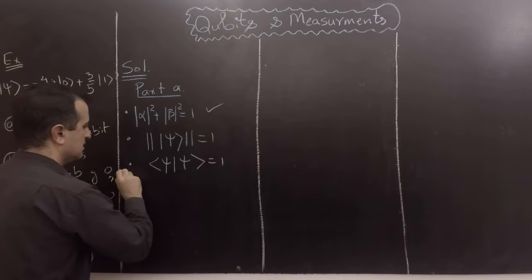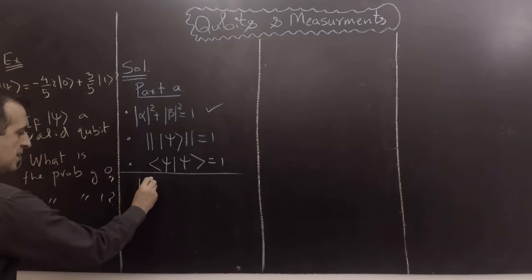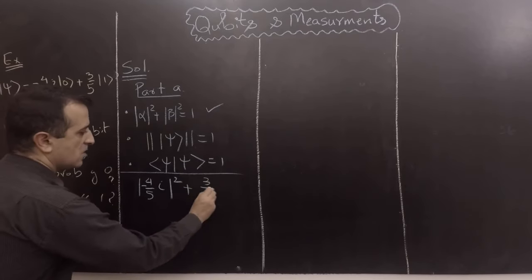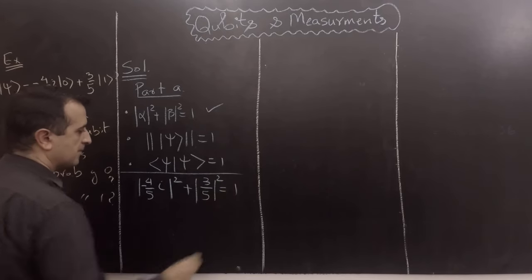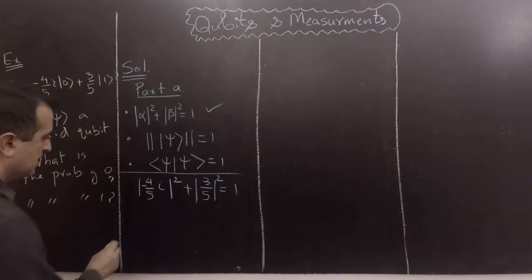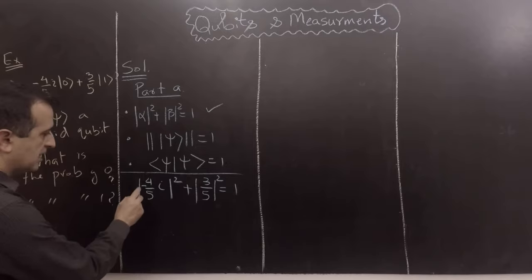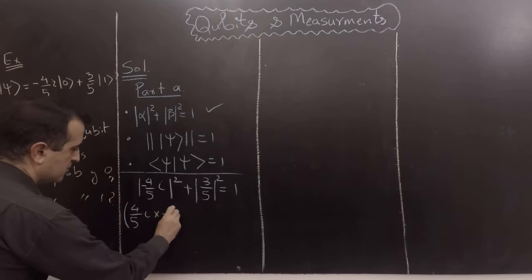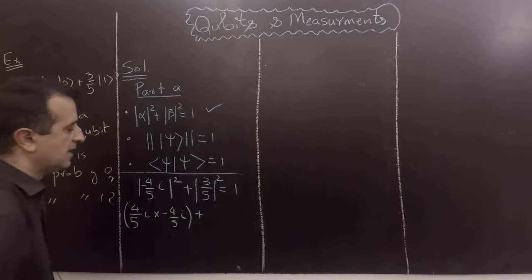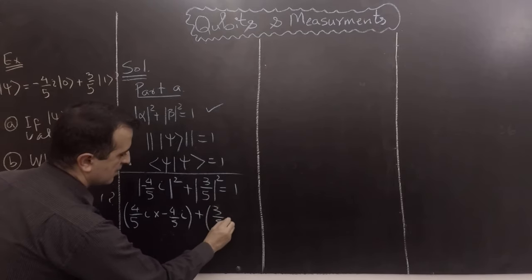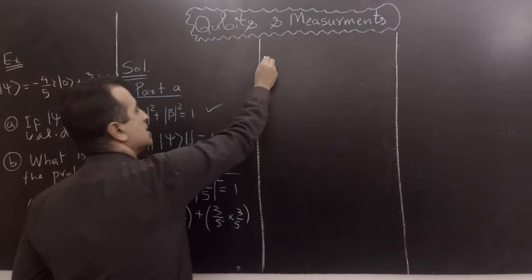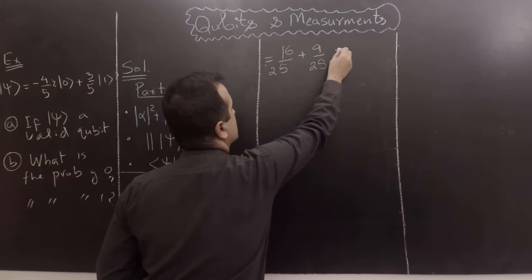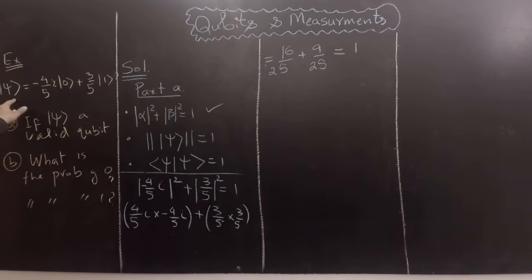Using the normalization method: |alpha|² is the conjugate of (−4/5 i) times (−4/5 i), plus |beta|² which is (3/5)². The conjugate of alpha changes the sign of the imaginary part, giving (4/5 i) times (−4/5 i), which equals 16/25. Adding 9/25 gives 25/25 equals 1. So |ψ⟩ represents a valid qubit.